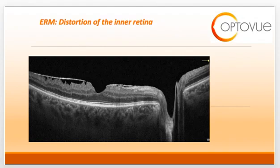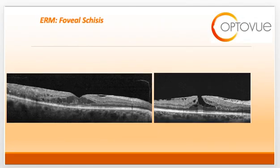The outer nuclear layer, outer plexiform layer, inner nuclear, and inner plexiform layers are all distorted due to that tractional force. Another complication of ERM is foveal schesis — separation of the inner and outer retinal tissues by column-like lesions visible as vertical lines on the OCT scan. The one on the left-hand side does not have a hole. The one on the right-hand side shows the development of a lamellar macular hole or partial thickness macular hole, again visualized by that anvil-shaped lesion.